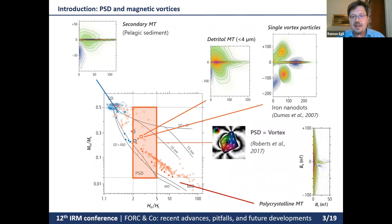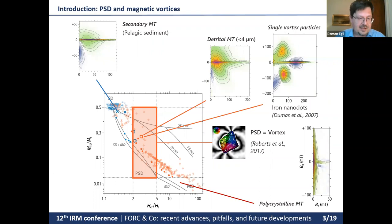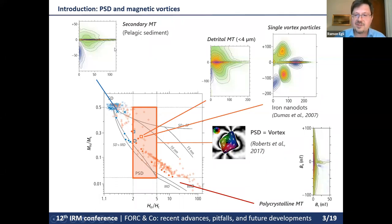This led Andrew Roberts and others in 2017 to invite us to revisit the concept of pseudo-single domain particles. It's not just a container of undefined things, but it denotes distinct magnetic states — different from single domain and multi-domain — a sort of extra domain state.